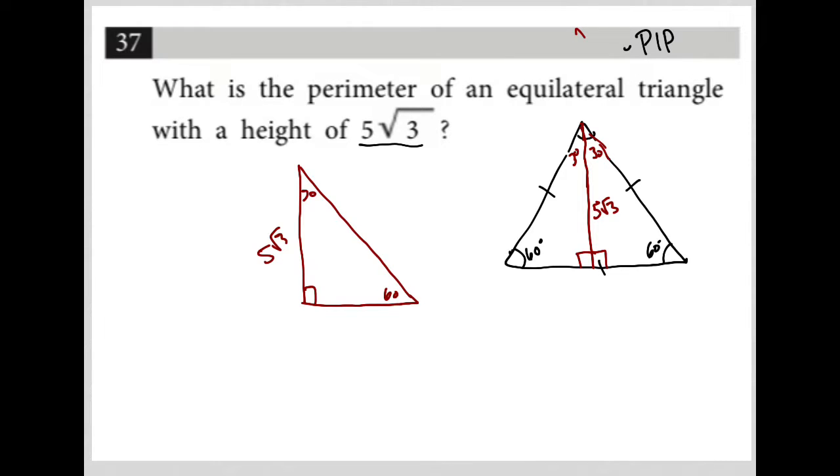And I can remember that on the formula sheet on the first page of the math section, I actually have this right triangle. I actually have a 30, 60, 90 right triangle.